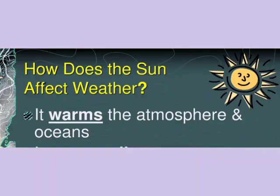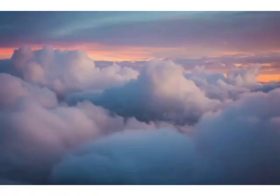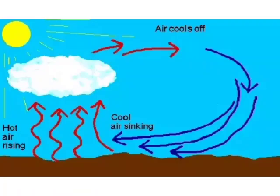Changes in weather take place because of the sun. It is the heat of the sun that causes the wind to blow and the clouds to form. When the sun shines brightly, it heats up the land. This causes the air above it to also get heated up. Warm air is lighter than cold air and so it rises up. Cool air rushes in to take its place.